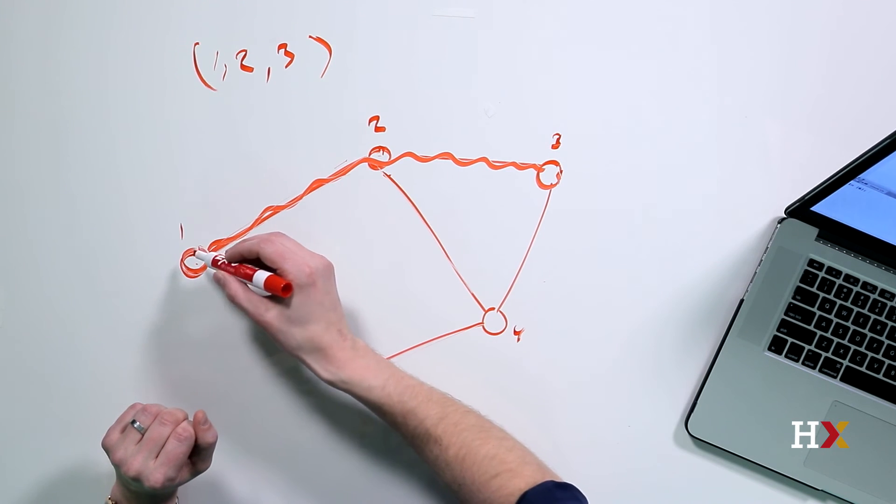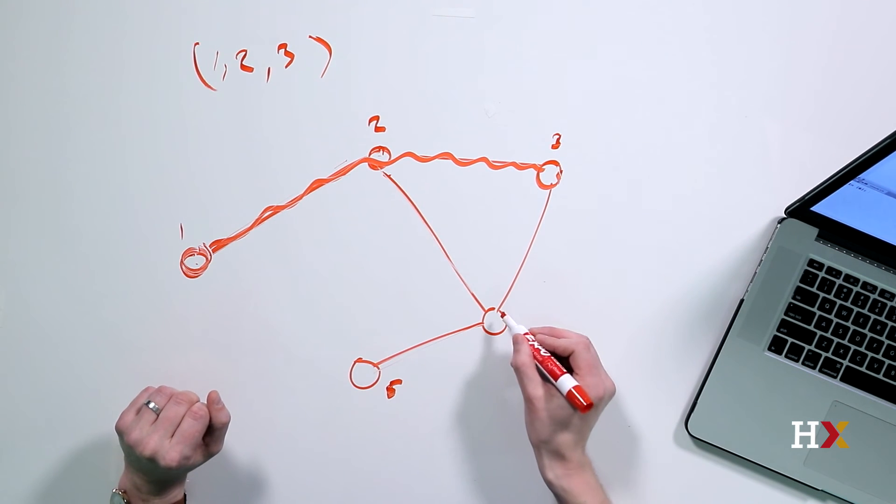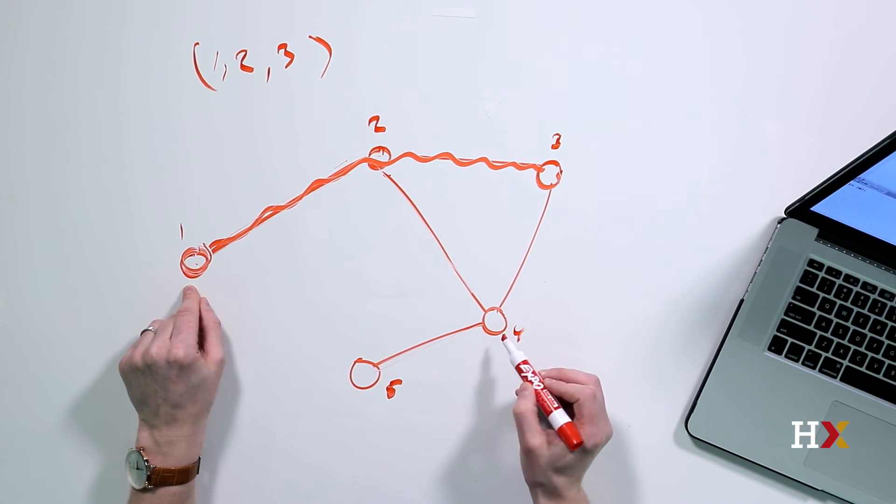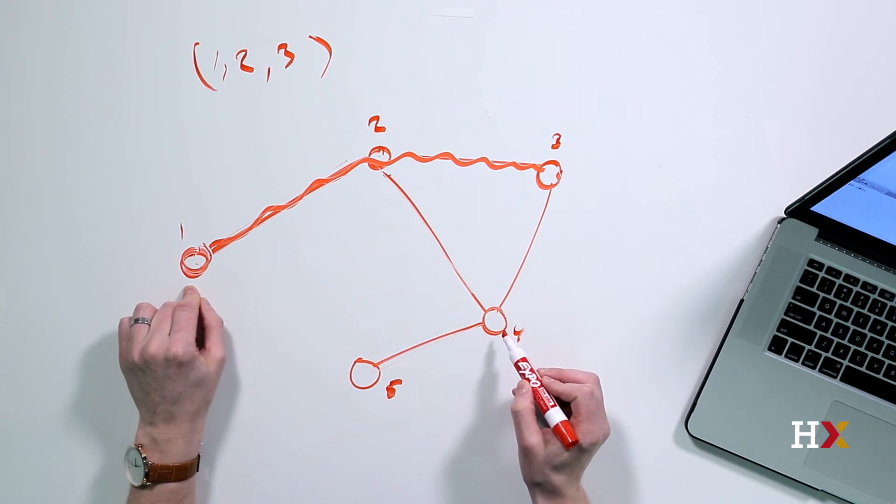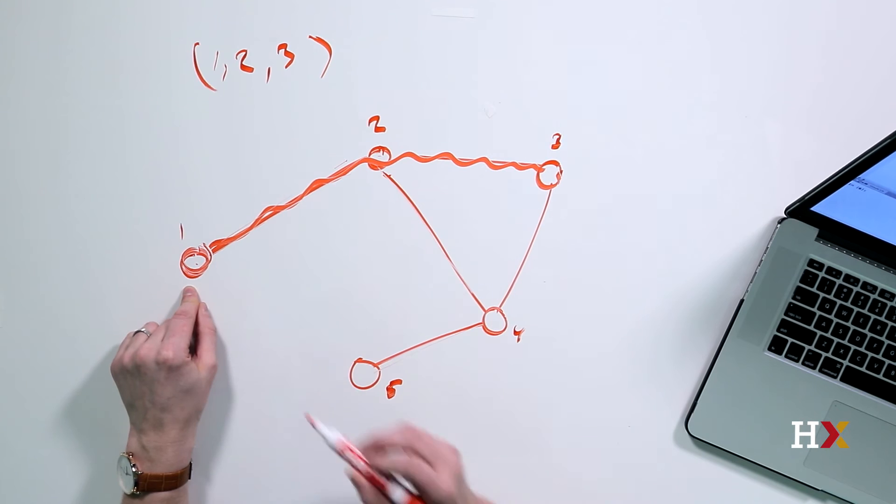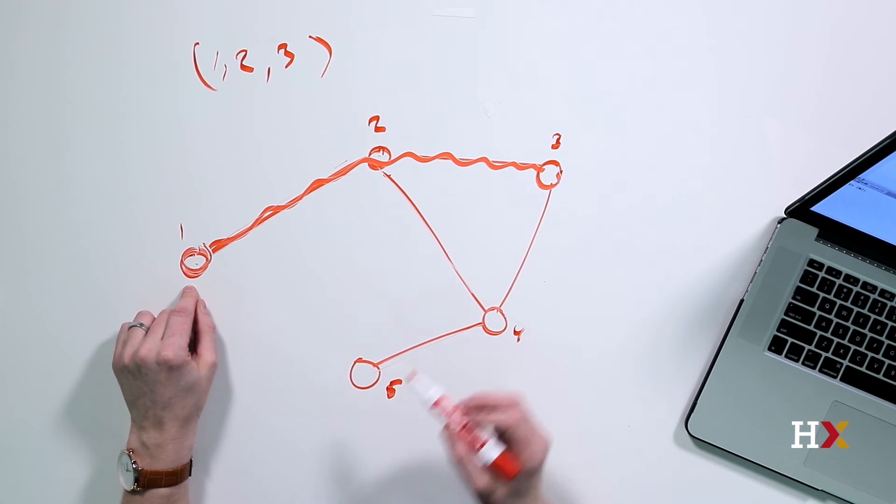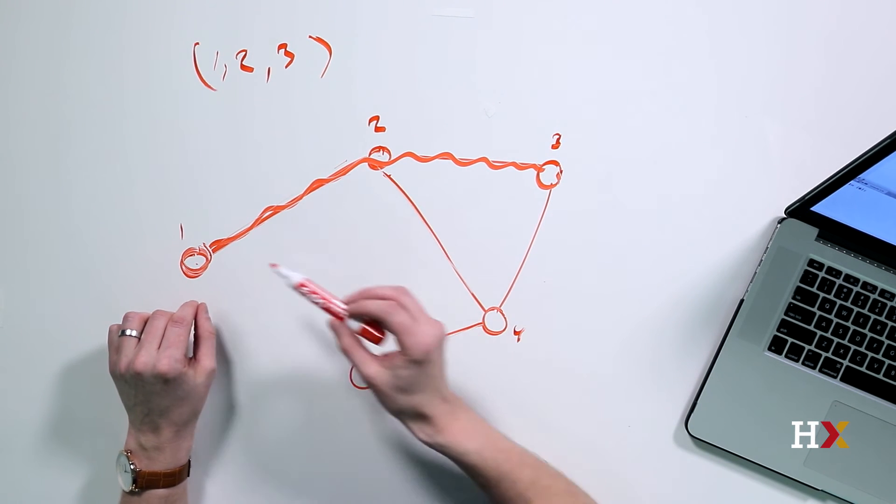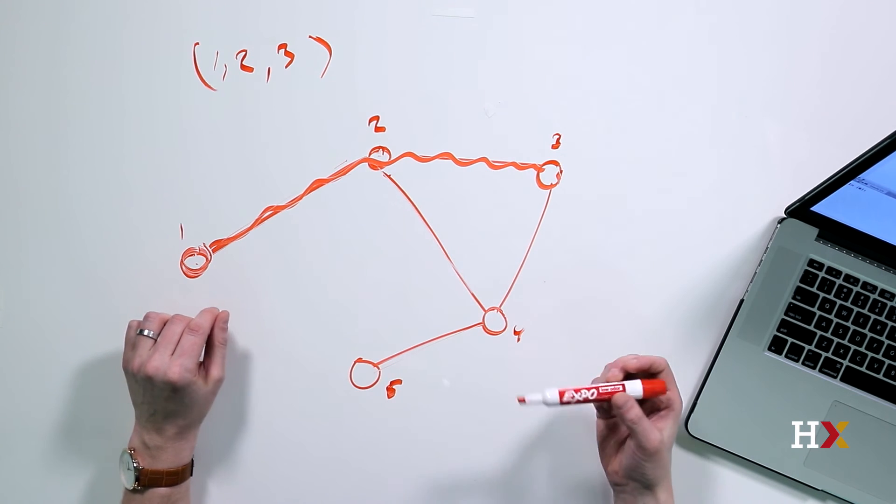A vertex V is said to be reachable from vertex U if there exists a path from U to V. That is, if there is a way to get from U to V. So, for example, looking at this vertex one, and let's say this one over here, four, one is reachable from four because we can get from four to one. And likewise, because in this case the graph is undirected, we also have a path from one to four.